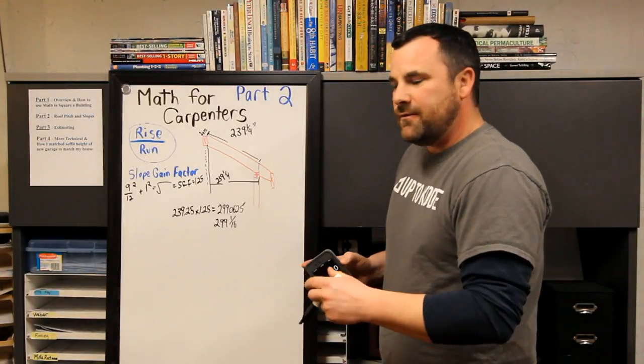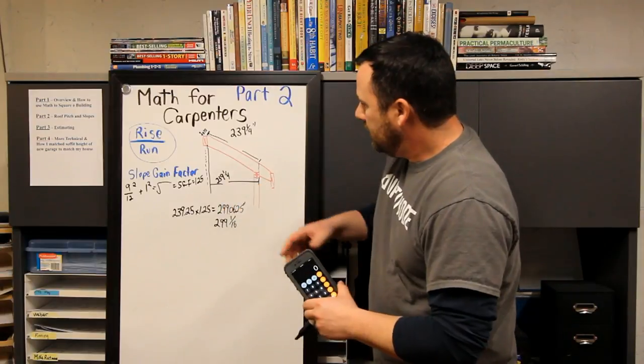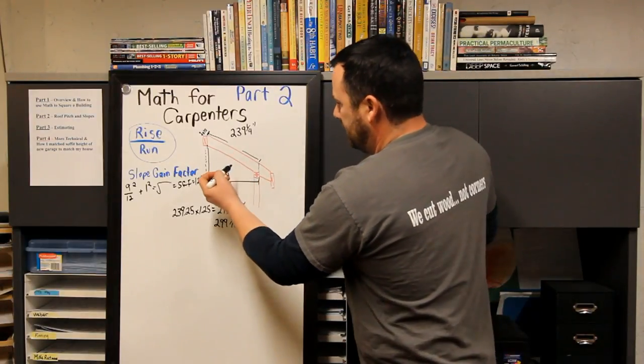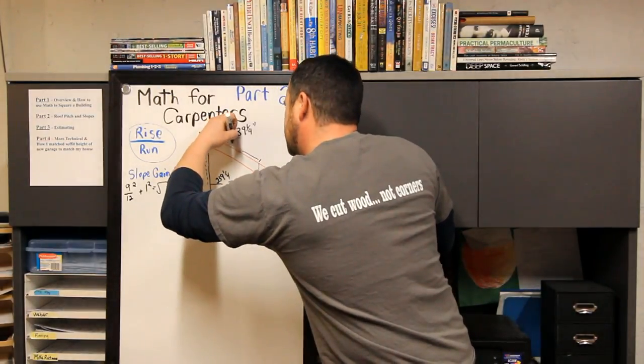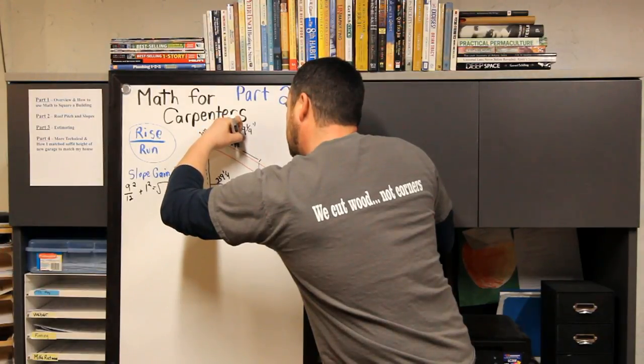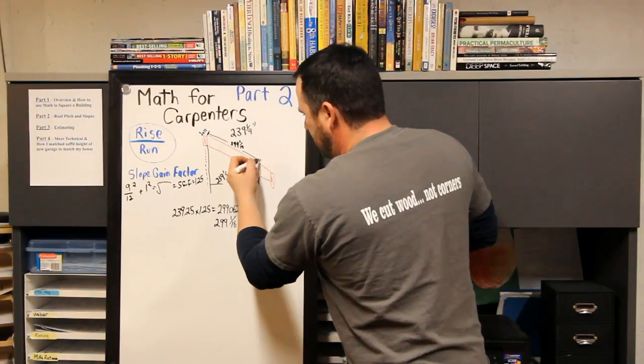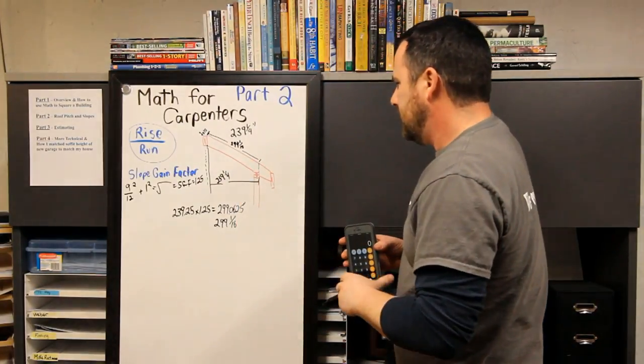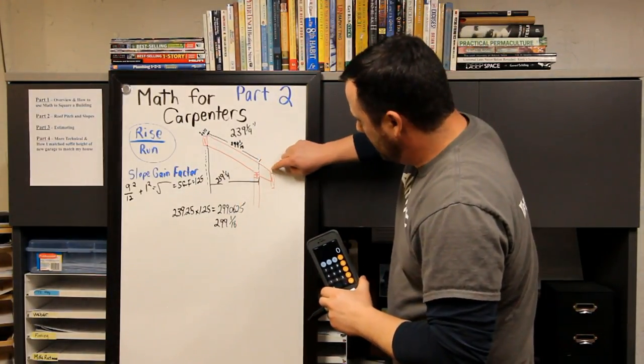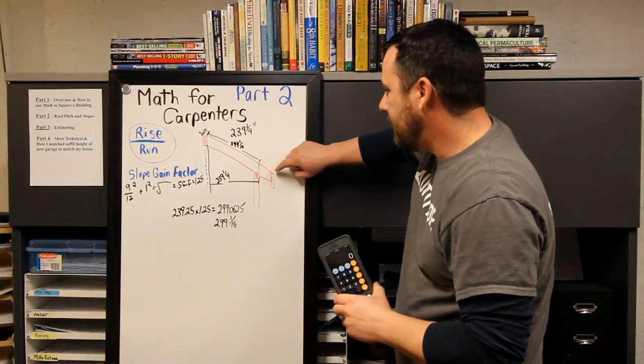Let's take it one step further. You'll do a layout, you know that this is 299 and 1/16th. So you're going to lay out from here, make a bunch of marks, you know where your bird's mouth is. But you also need to know what length to cut your total rafter.